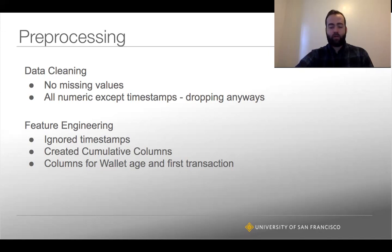For feature engineering, we can use those timestamps to make cumulative columns. We can do cumulative number of transactions on that wallet, number of income, total amount of bitcoins. We can also do wallet age and set wallet age of zero for the first transaction that wallet's ever had.